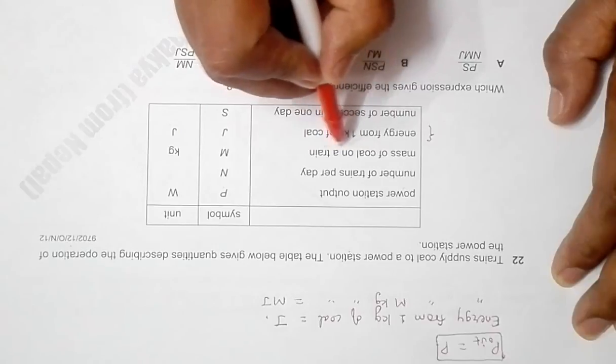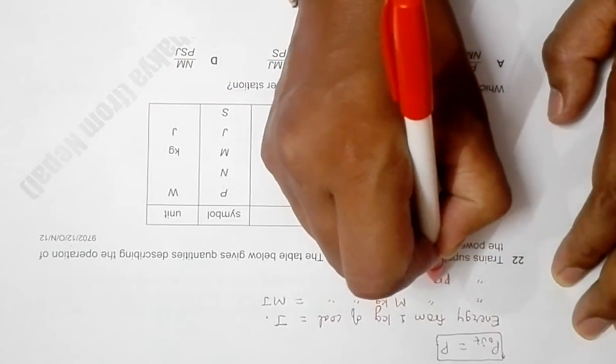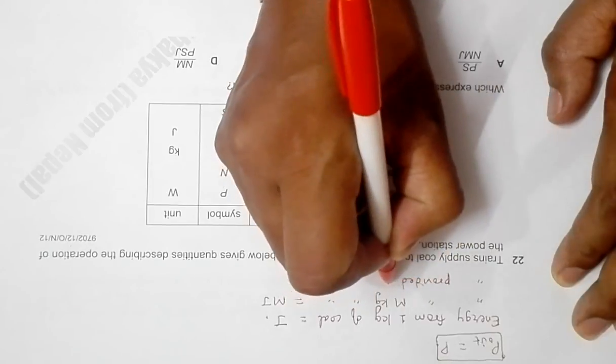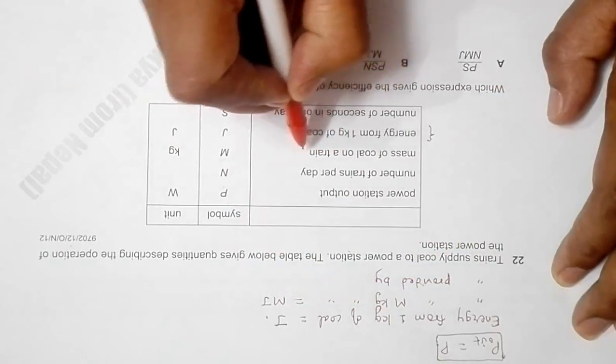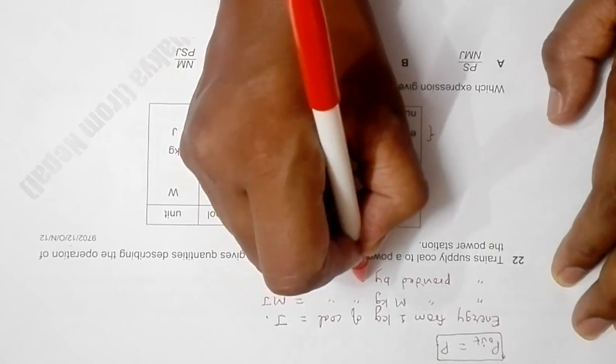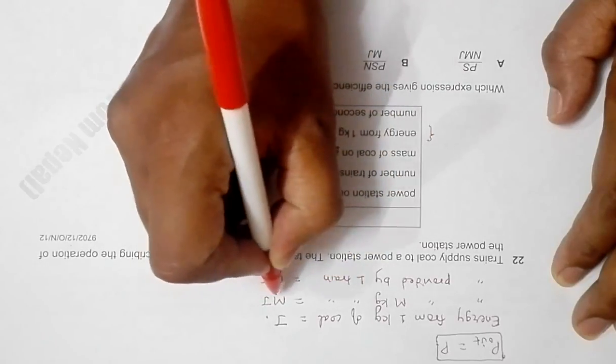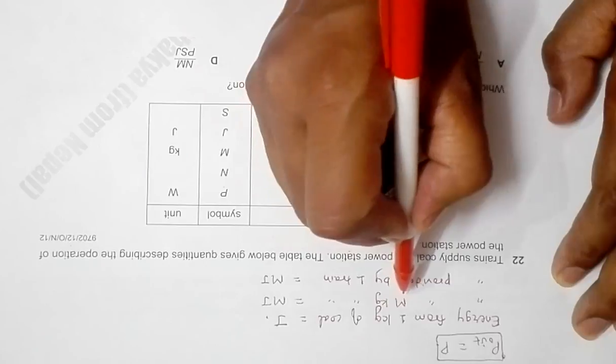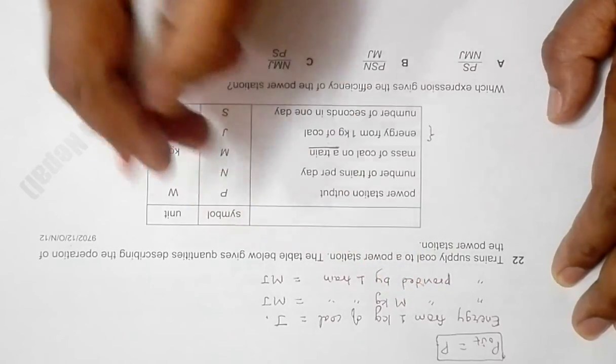We can say that energy provided by one train, since m kg equals one train, so one train is equal to mJ. This is the same, I just substituted one train for m kg.